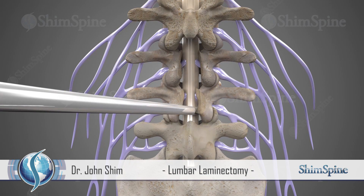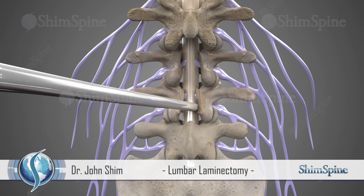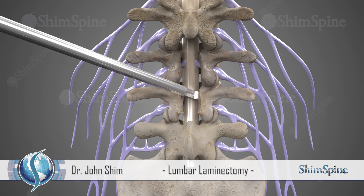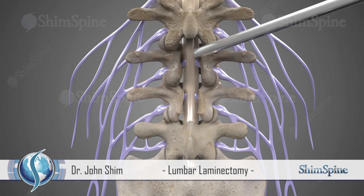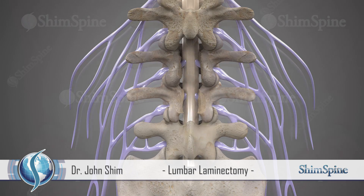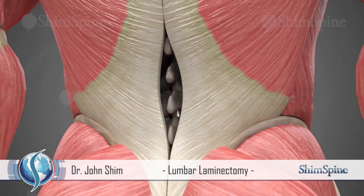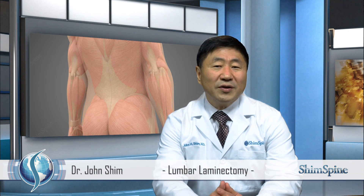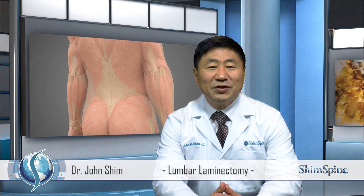The nerve sac is identified and protected, associated bone spurs are removed, and the nerves are given more room to exit the space called the foramen. The wound is then closed. For the vast majority of patients, they can resume normal activities within a few months. Some one or two level laminectomy patients can have the procedure done as an outpatient.